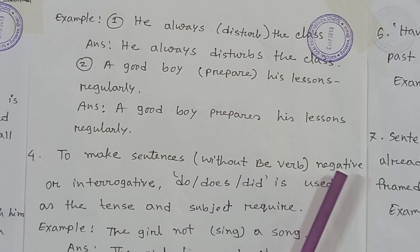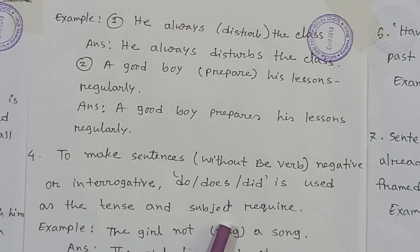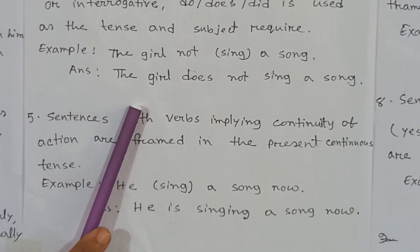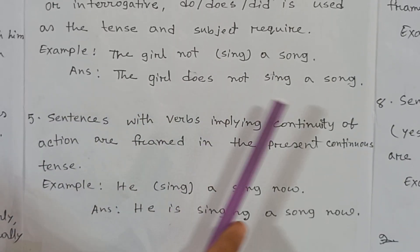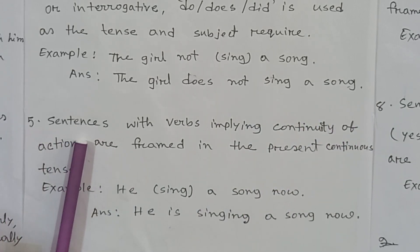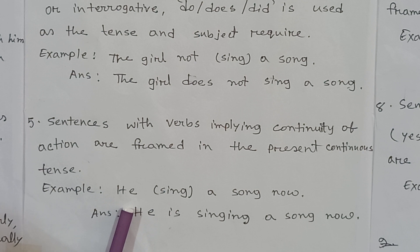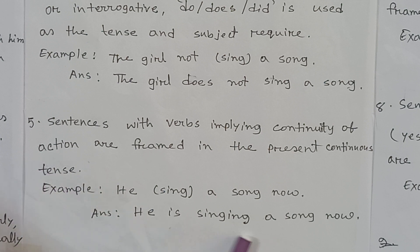Rule number four: to make negative or interrogative sentences without a be-verb, do, does, or did is used as the tense and subject require. Rule number five: sentences with verbs implying continuity of action are framed in the present continuous tense. For example, 'He (sing) a song now' — you write 'He is singing a song now.'